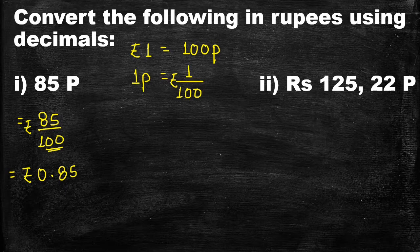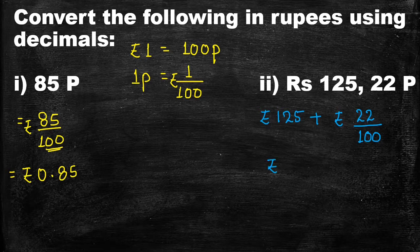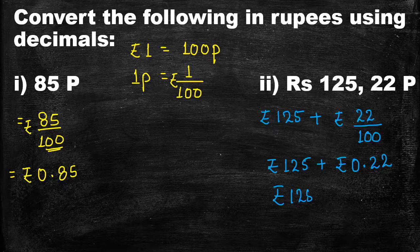Similarly, in the next part, rupees 125 and 22 paise are given to us. We will write rupees 125 as it is, plus 22 paise written as 22 upon 100 rupees. So it will be equal to rupees 125 plus rupees 0.22 — placing the decimal after two digits on the left side — giving rupees 125.22.